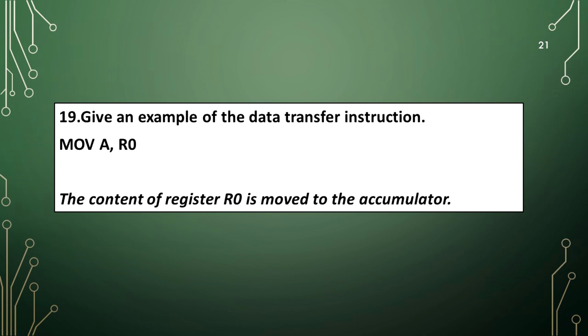Give an example of the data transfer instruction MOV A, R0. The content of register 0, R0, is moved to the accumulator.